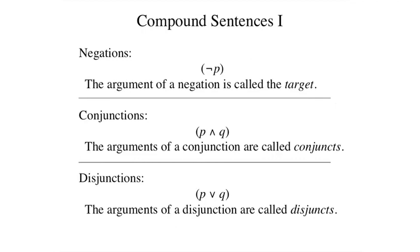Compound sentences are formed from simpler sentences and logical operators of various sorts. There are six types of compound sentences in propositional logic.